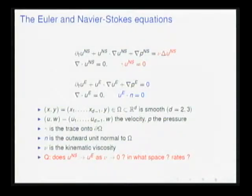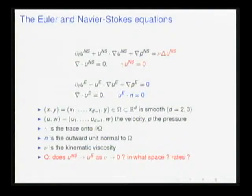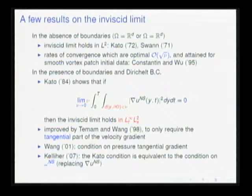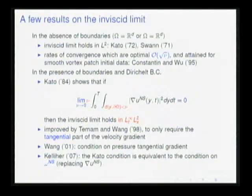The question is: as the kinematic viscosity goes to zero, do solutions of Navier-Stokes converge to solutions of Euler? If yes, in what space and with what rates? And if no, what happens? This is the classical problem. In the absence of boundaries, the answer is yes — Navier-Stokes does converge to Euler, as was proven by Kato and Swan. In terms of rates, for vortex patches you get sharp rates, as shown by Constantin and Wu.